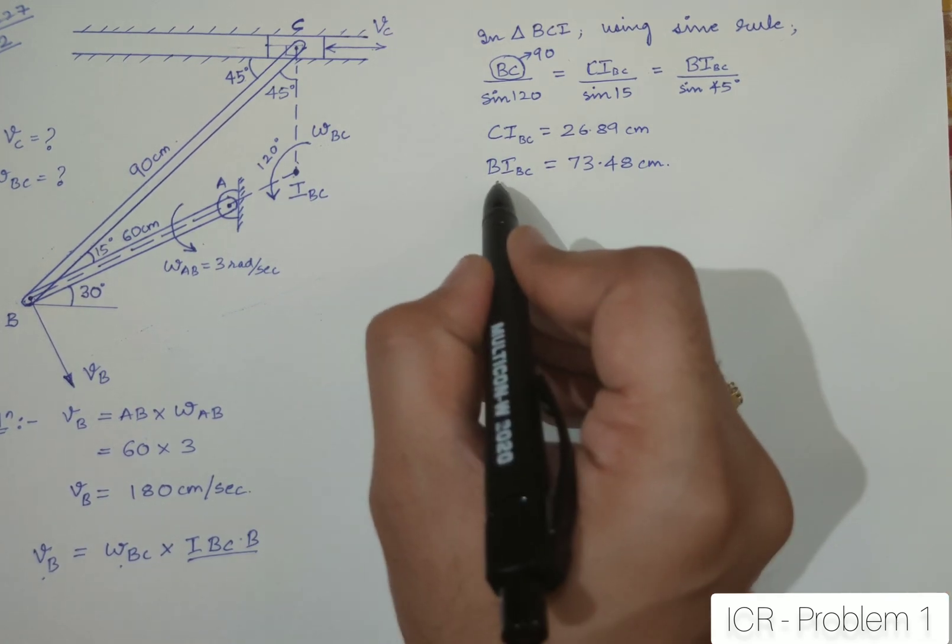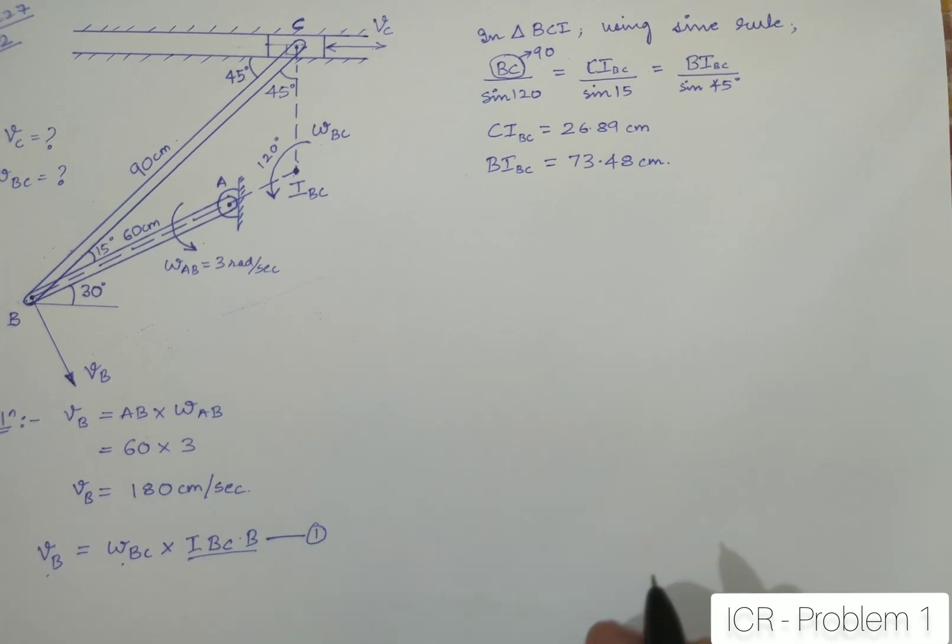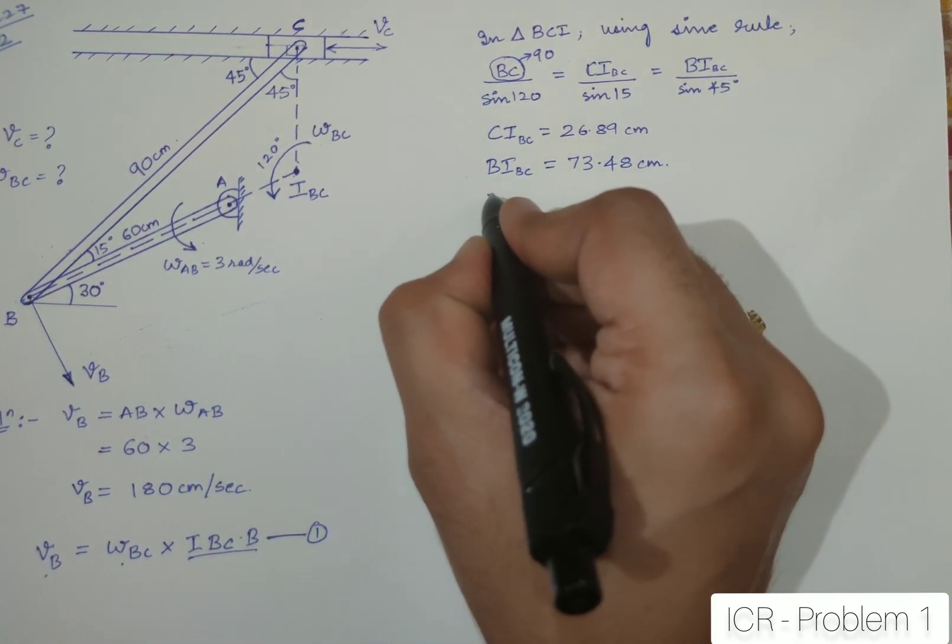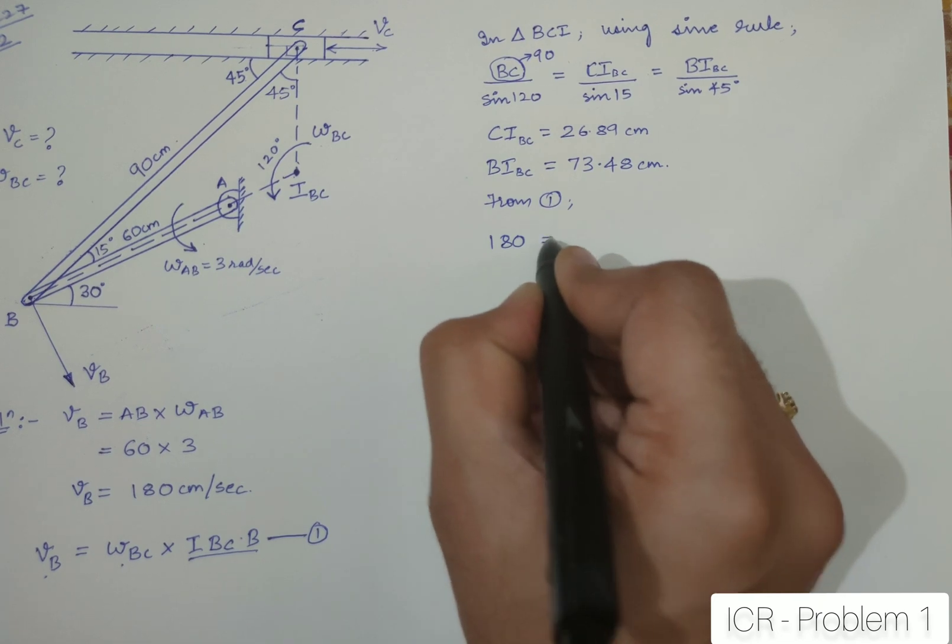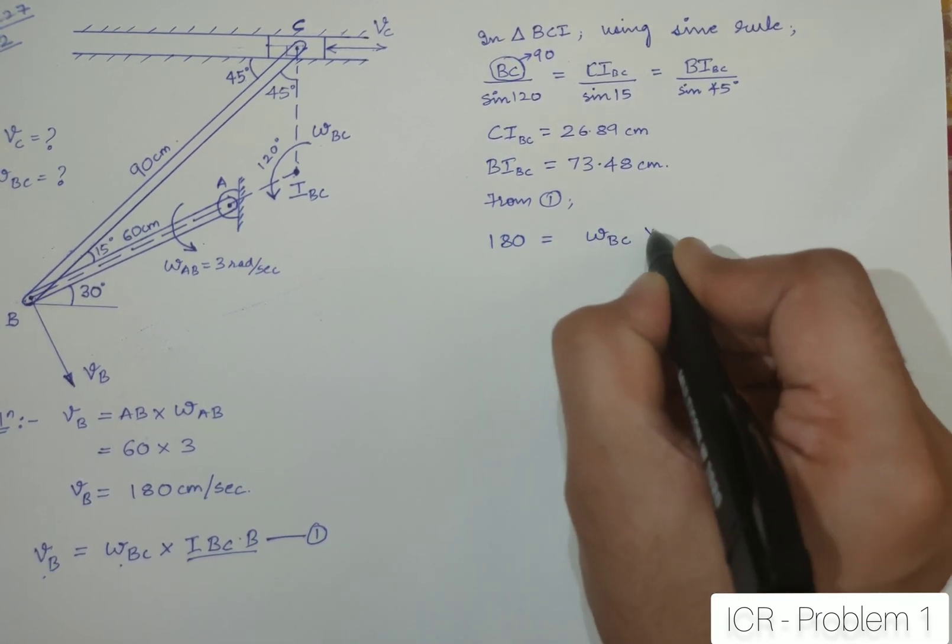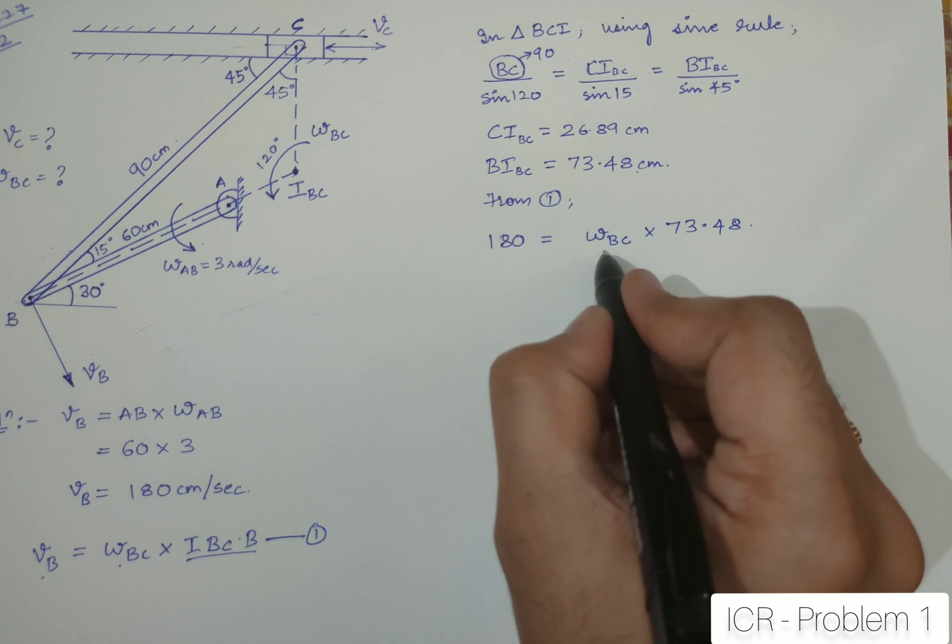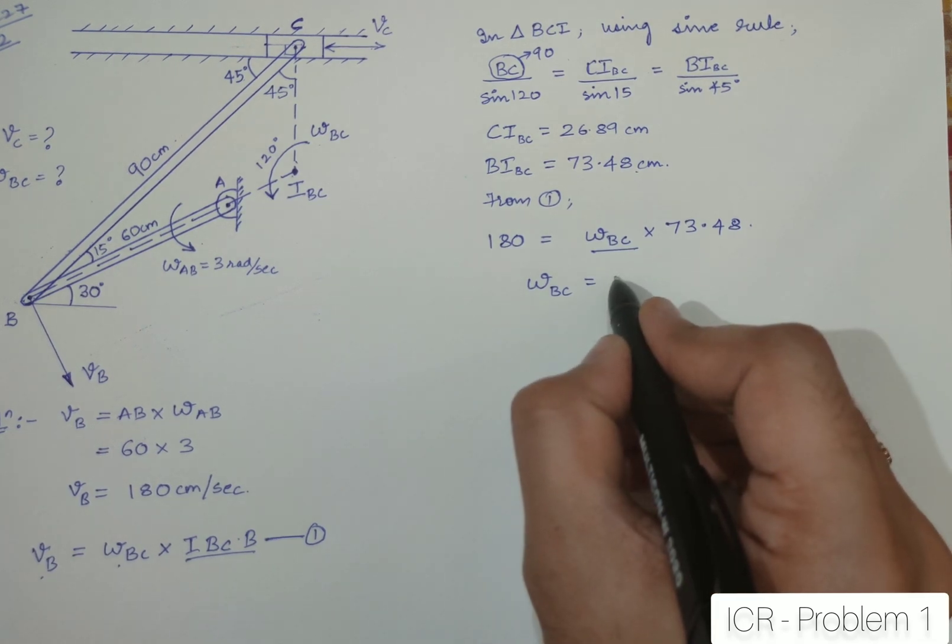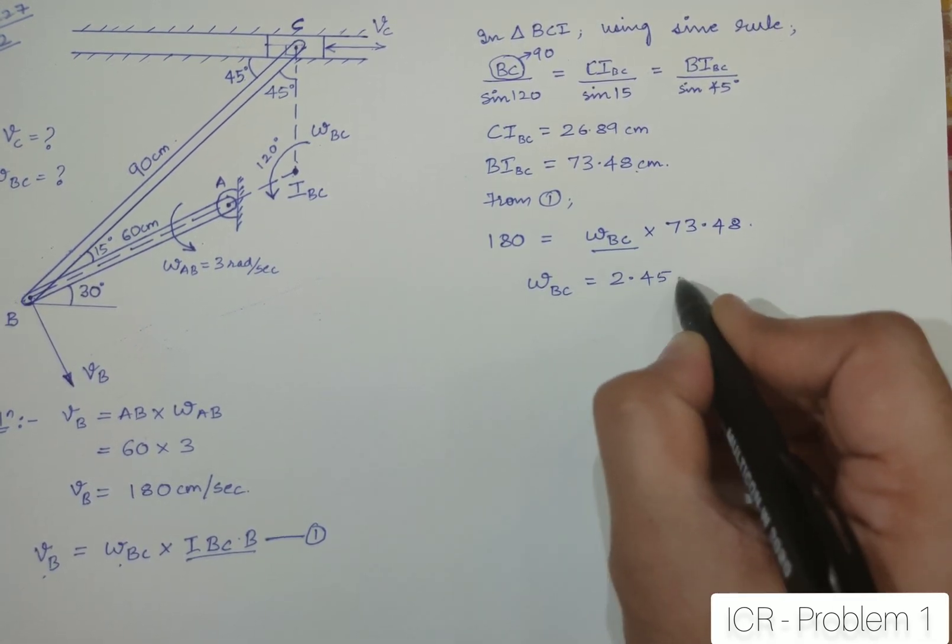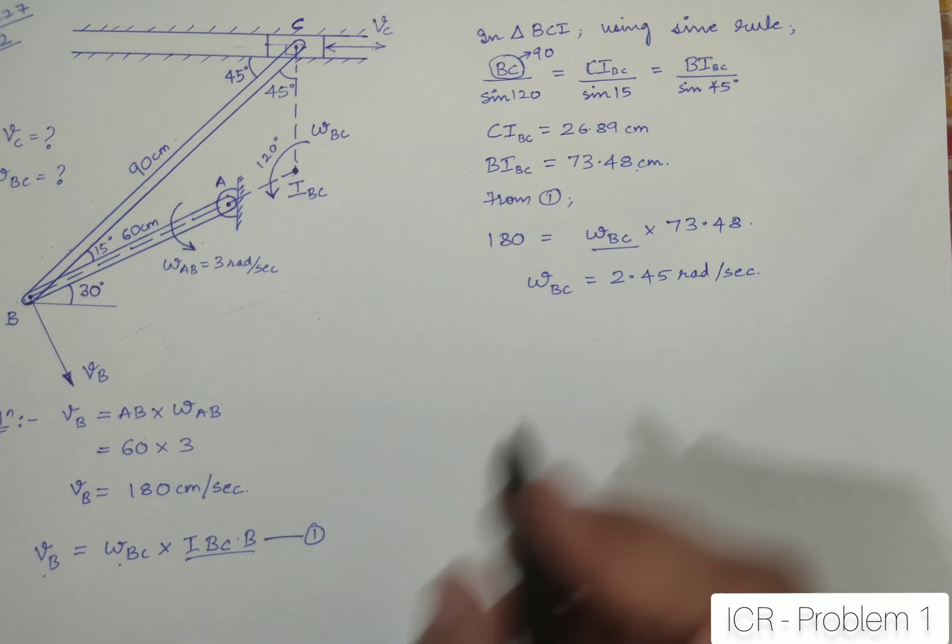Now, I have got the distance BIBC over here, which was required. Let me call this equation as 1. Now, I will be using this equation as 1. From equation 1, I can say that 180 is equal to omega BC into BIBC is 73.48. So from here, I can find out omega BC, which when I calculate should come out to be 2.45 radians per second. So, we have got the omega BC now.